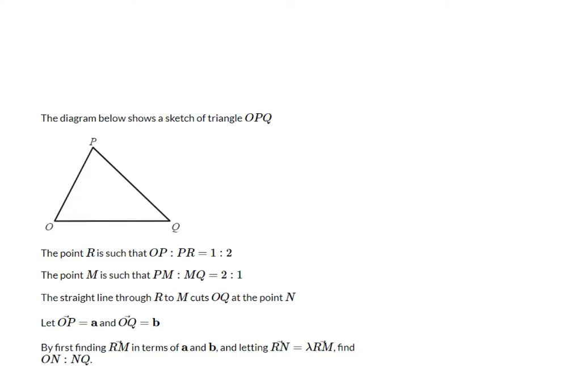To start off with a question like this, you need to have a complete diagram. We don't have that, so let's start to draw. It says that the point R is such that OP to PR is 1 to 2. So if that was a straight line from OP, we would extend our line upwards until we eventually got to a point R.